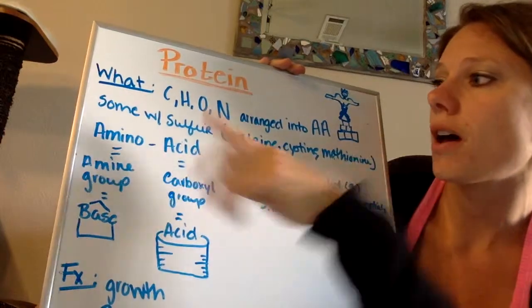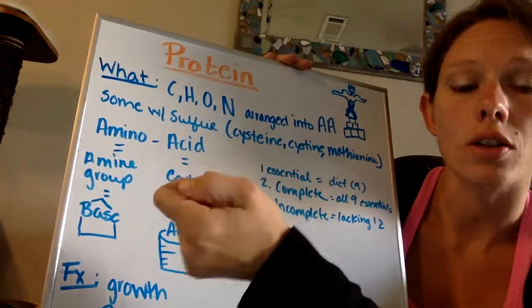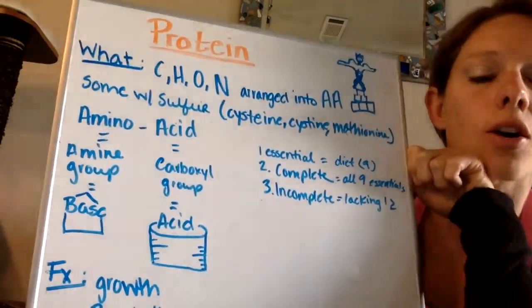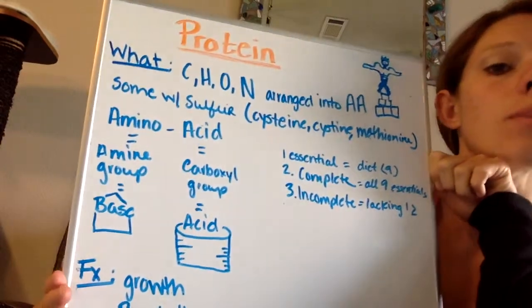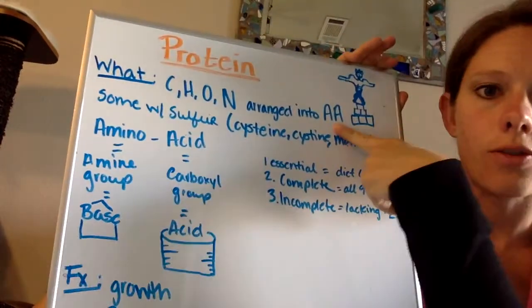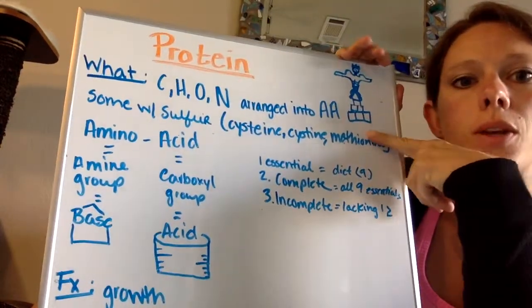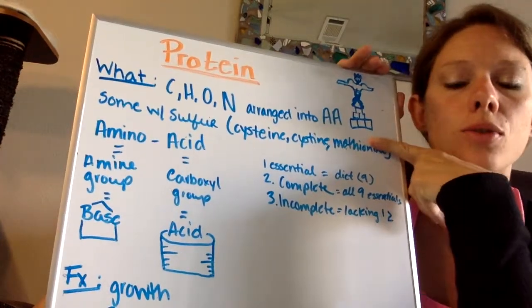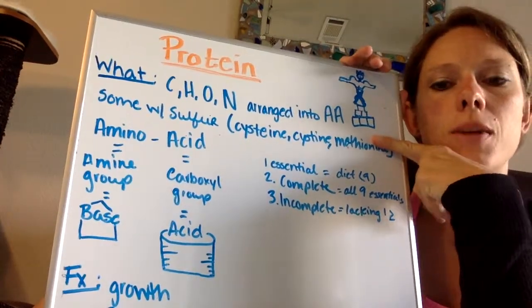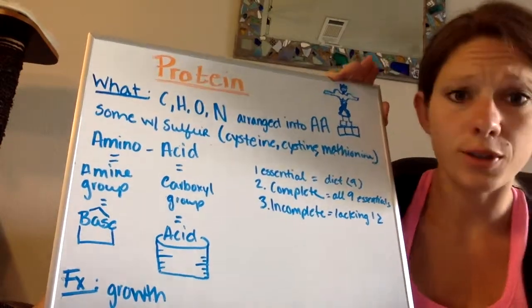It is made up of carbon, hydrogen, oxygen, and nitrogen, and these are arranged to make different types of amino acids, AA for amino acids, and we know that's our building block to proteins and muscle. So these amino acids are going to help us synthesize protein.